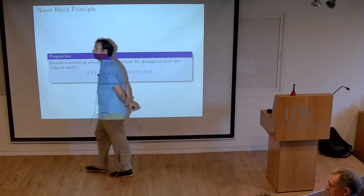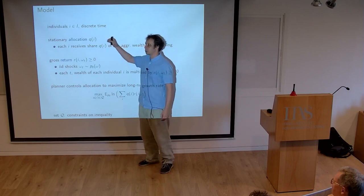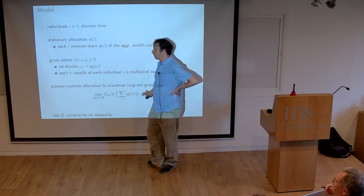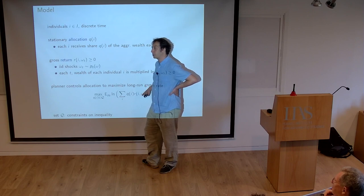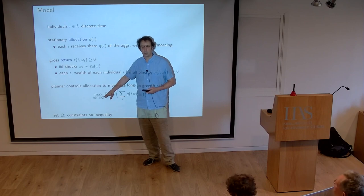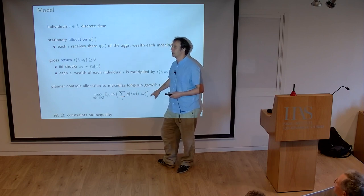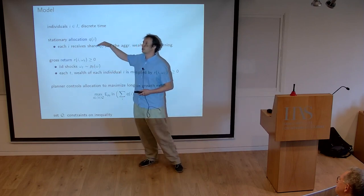On the maximization problem: implicitly the policy is assumed to be stationary. Can a non-stationary policy do better? The answer is no. This problem is, up to relabeling and an additional constraint, equivalent to what Kelly was studying when optimizing financial portfolios — Kelly's betting with an additional constraint that some portfolios may not be feasible. They established that even if you allow non-stationary policies, given that the shocks are i.i.d., the stationary policy is optimal.